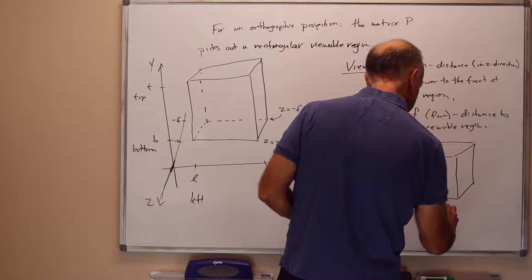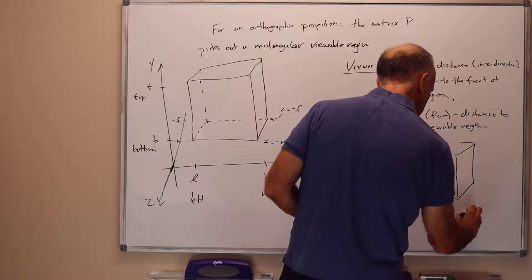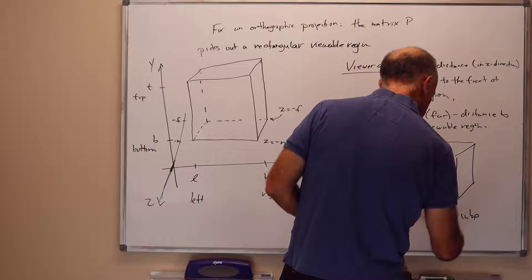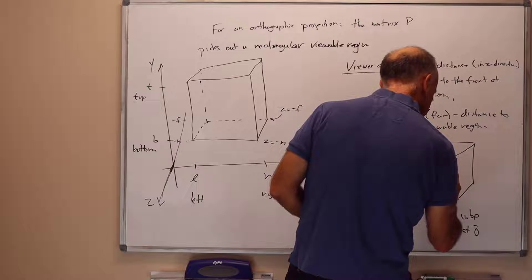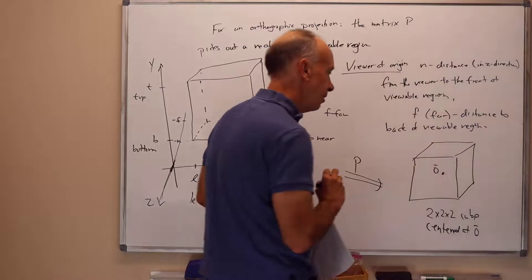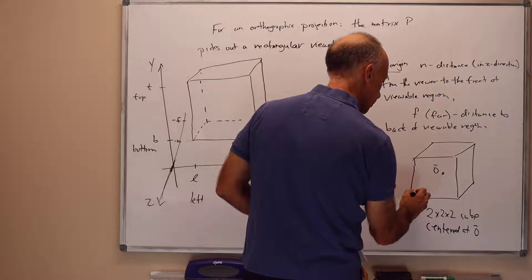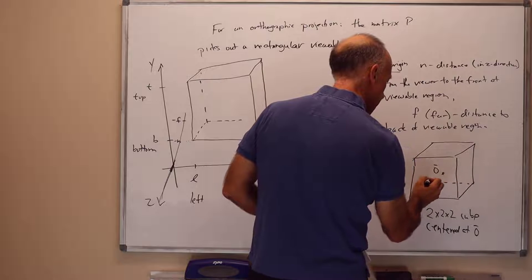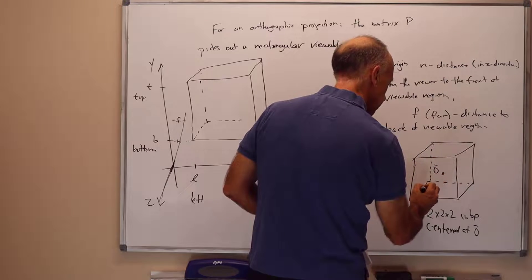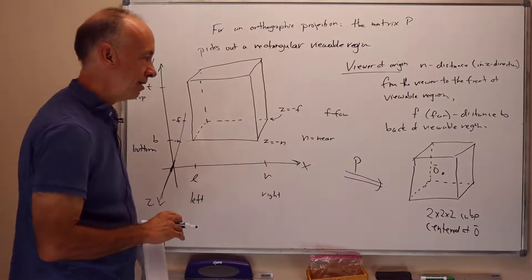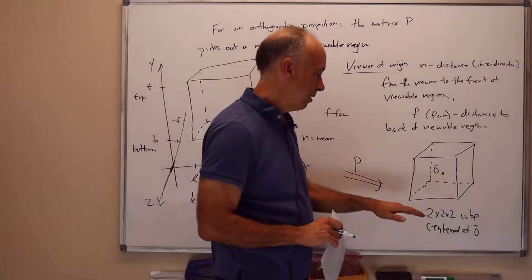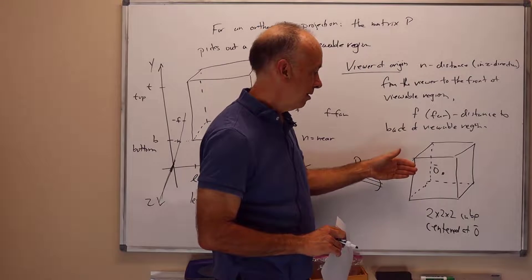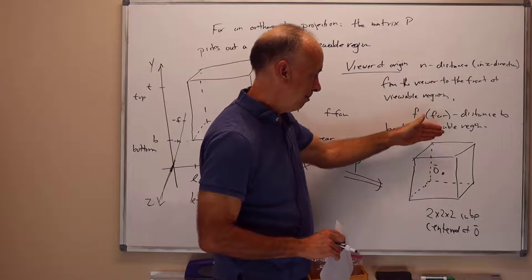F, which stands for far, this is the distance to the back of the viewable region. And the job of the projection matrix is to take this cube and map it. So what the projection map does, takes this cube and maps it to the 2×2×2 cube centered at the origin. So the center of this cube is here, at the origin. Not a very well-drawn cube. Imagine a 2×2 cube, x goes from minus 1 to 1, y goes from minus 1 to 1, z goes from minus 1 to 1.